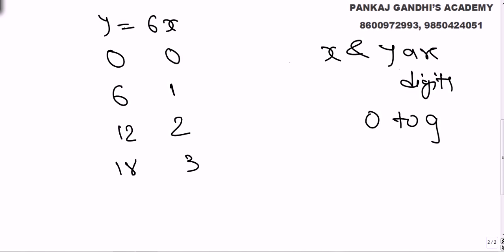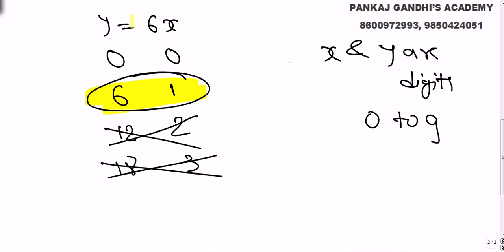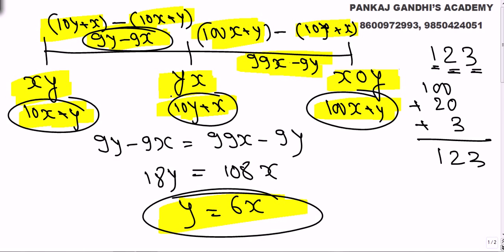Two twelve but a digit can never be more than nine. So the only possible answer is one six. Only possible answer is one six, x one and y six.